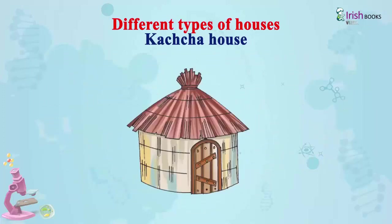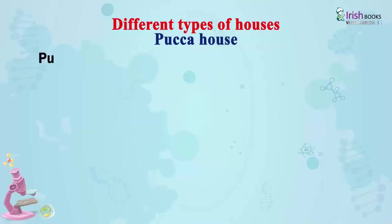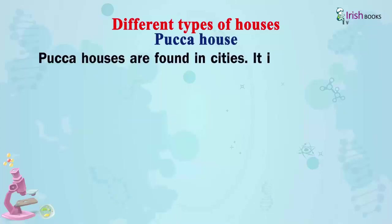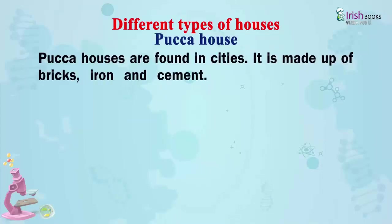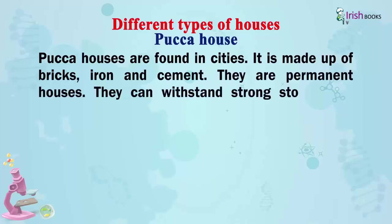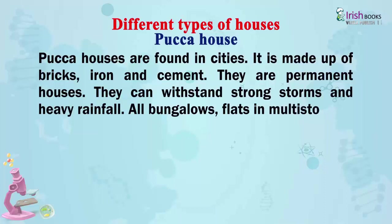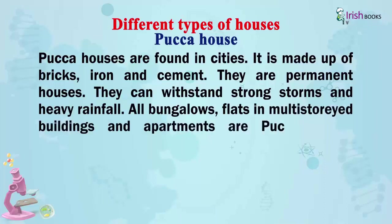Paka house. Paka houses are found in cities. They are made up of bricks, iron and cement. They are permanent houses. They can withstand strong storms and heavy rainfall. All bungalows, flats in multi-storey buildings and apartments are paka houses.